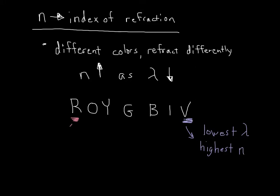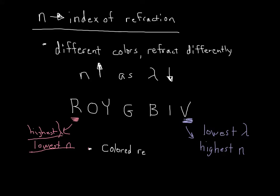Conversely, red has the highest wavelength, so it has the lowest index of refraction. You see this every day when looking at sunsets — sunsets look red because red light is bent the least, having the highest wavelength and the lowest index of refraction. This process of different colors refracting differently has a specific name you've probably heard of and can see when you shine light through a prism: it's called dispersion.